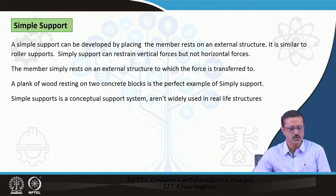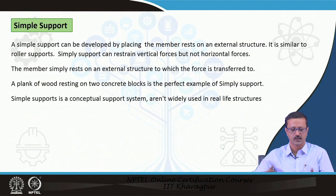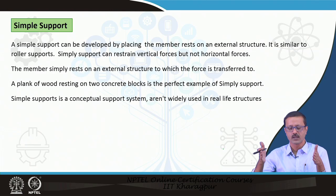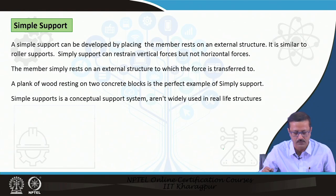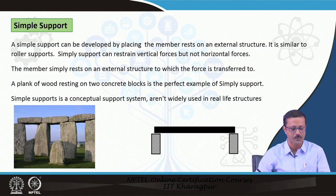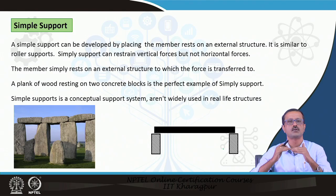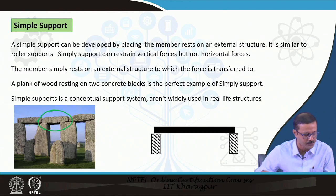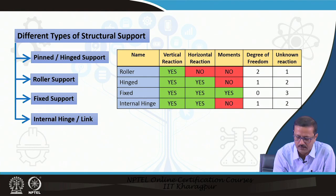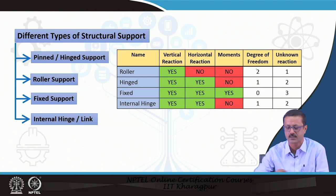There is a support system called simply supported. In this system no vertical movement is allowed, and horizontal movement may be restricted in one direction so the beam does not slide. A plank of wood resting on two concrete blocks is a perfect example. In summary: a roller has 1 vertical reaction unknown, no horizontal reaction, degree of freedom = 2, unknown reactions = 1.